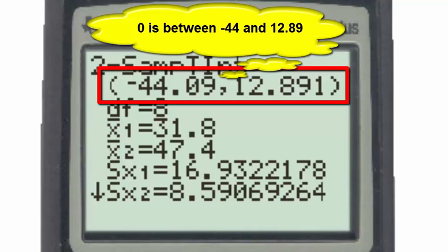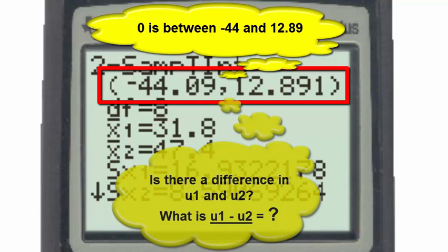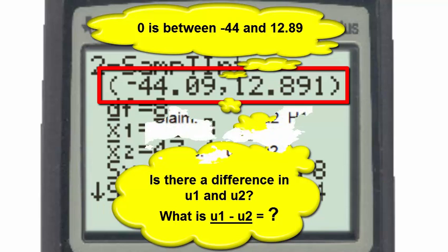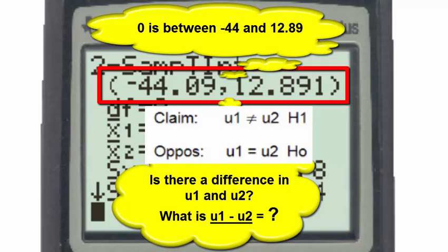The significance of this confidence interval is that it contains the number zero. That is, the difference between actresses and actors ages at some point is zero, and if the difference is zero, that means that they are the same, which reinforces the decision to fail to reject the null hypothesis that mu1 is equal to mu2. This is how the confidence interval estimate of the difference and the hypothesis tests are really showing the same result.